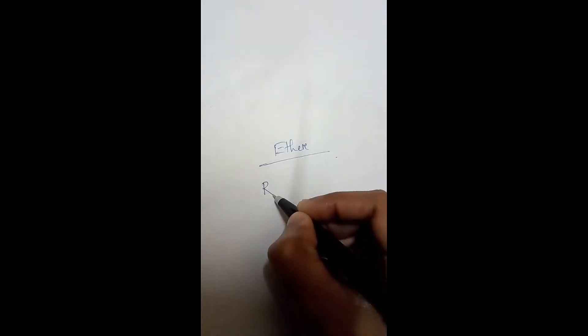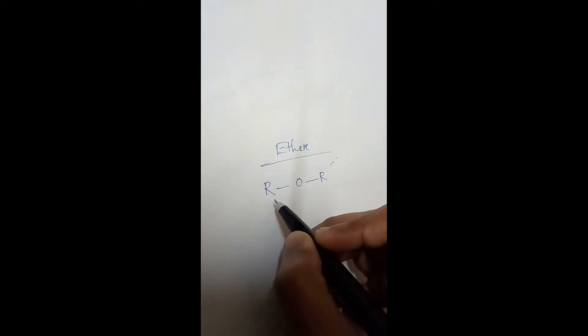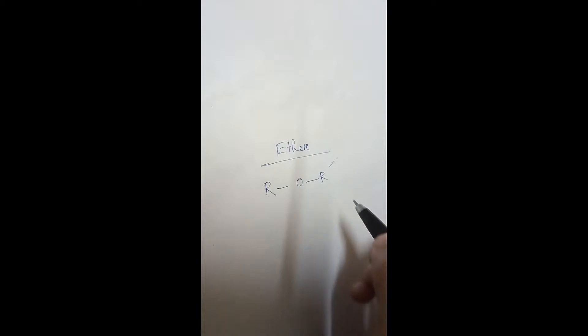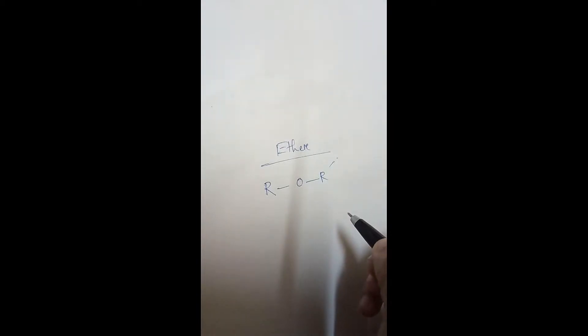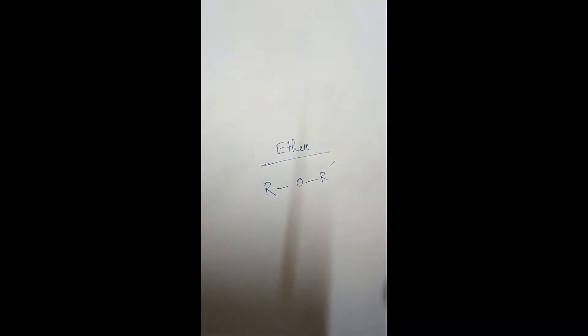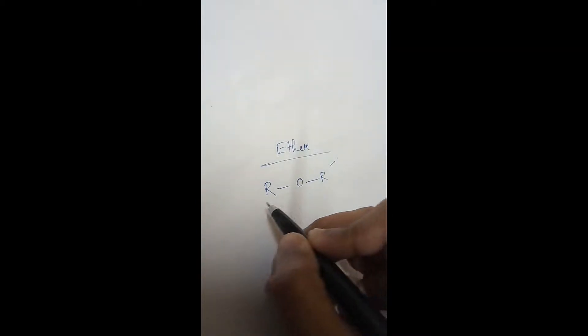How do we identify ether compounds? Always remember the general formula for ether is ROR prime. Here, R and R prime are both alkyl groups, with an oxygen atom between the two alkyl groups. Also, R and R prime can both be the same or both can be different.